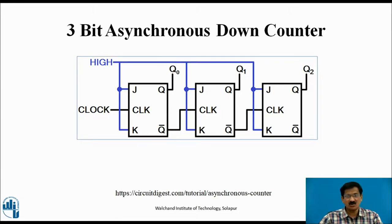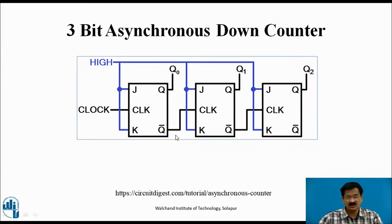This is the 3-bit asynchronous down counter, again using 3 flip-flops with JK inputs connected to logic 1 (treated as T flip-flops). The only difference from the up counter is that the Q-bar output is connected as the clock to the next flip-flop. Initially Q2, Q1, Q0 = 0,0,0. At the first clock pulse, Q0 toggles from 0 to 1; Q0-bar becomes 0, which activates the next flip-flop so Q1 toggles to 1; similarly Q1-bar becomes 0, activating Q2 to toggle to 1. So the output is 1,1,1 at the first clock pulse.